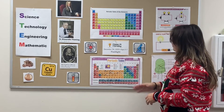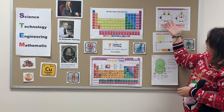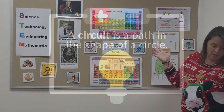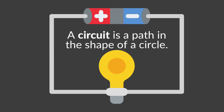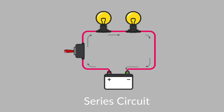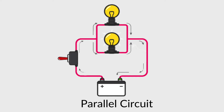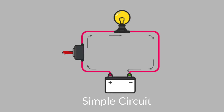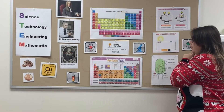We're going to play with circuitry. This is an example of different types of circuits. What is a circuit? A circuit is a path in the shape of a circle. This one is called a series circuit — you see two light bulbs in a series with a switch, and this is where the power comes from, the battery. This one's called a parallel circuit because the light bulbs are not in one flow, they're in two separate paths. A simple circuit is what we're going to create to make our flashlight — that's one light bulb, one switch, and one battery, all going in one big circle.